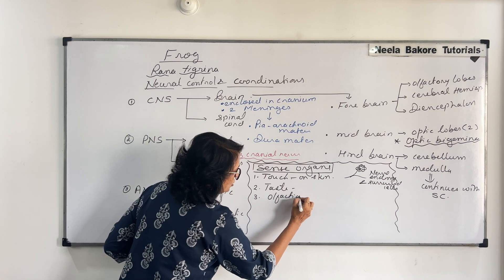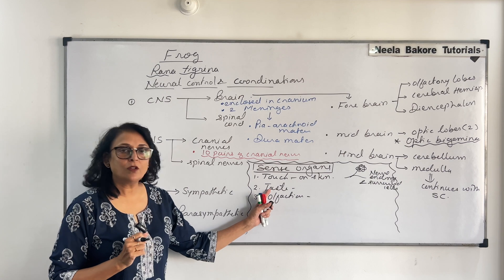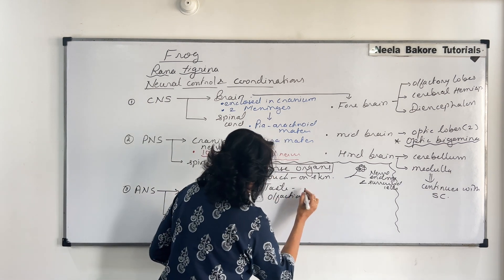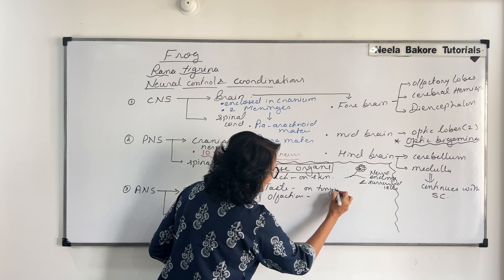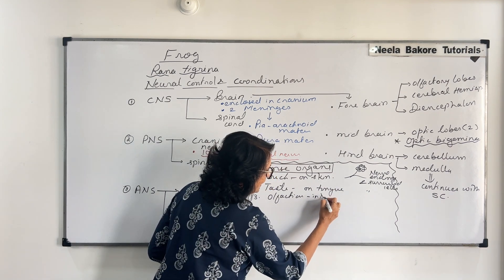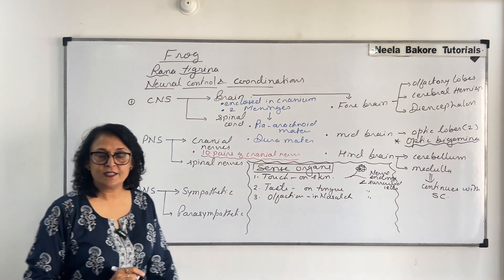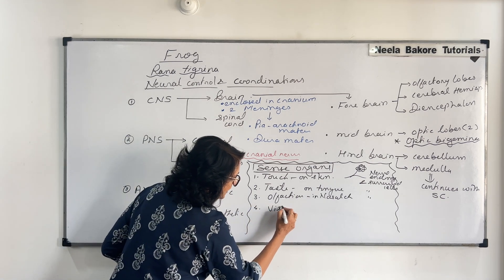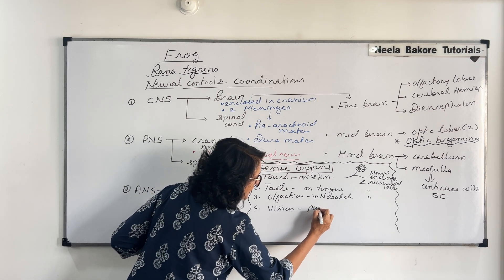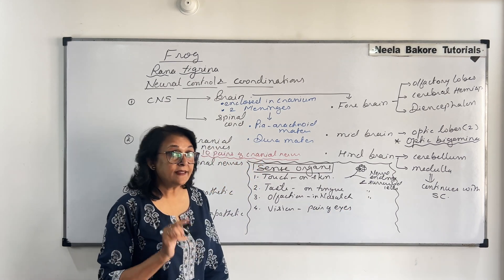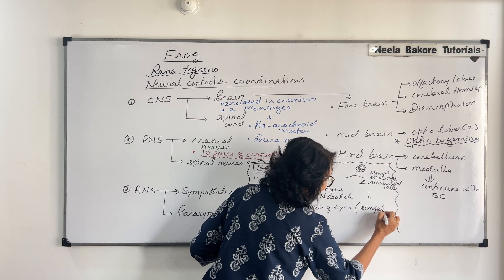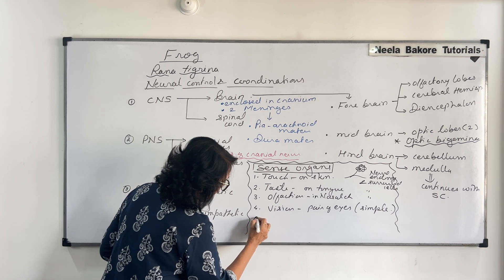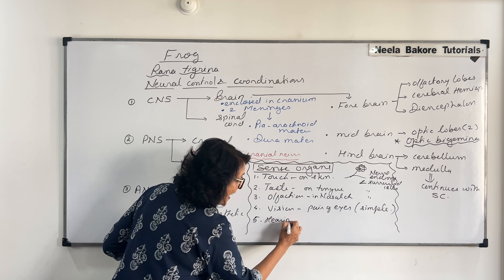The third sense organ is for smell — that is olfaction — with olfactory epithelium in the nasal chamber. So touch organs are on the skin, taste organs are on the tongue, and olfaction is in the nasal chamber. These three are similar: simple structures. The other two are well developed. The fourth is for vision — frogs have a pair of eyes. These eyes are bulging and they are simple eyes, not compound ones.